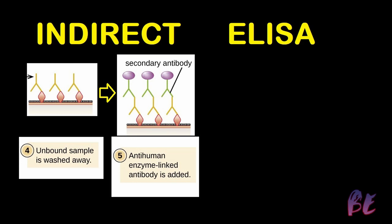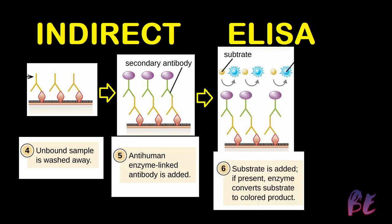This secondary antibody is the anti-human enzyme-linked antibody, which will bind with the first antibody but not with the antigen. Substrate is then added; if enzyme is present, it converts the substrate to a colored product, and this colored product can be detected by the spectrophotometer.